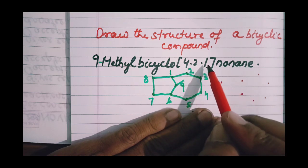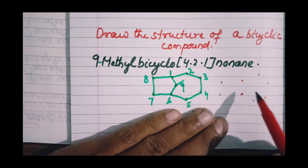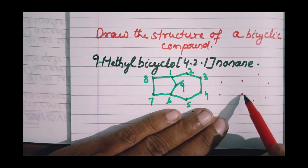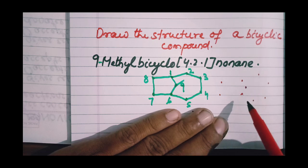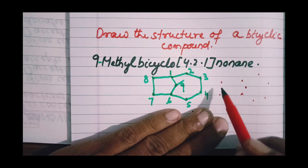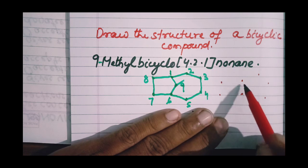Now there is another carbon bridge in between these two bridgehead carbons having a single carbon atom. Let's put a single dot here. This is a four-carbon bridge, this is a two-carbon bridge, this is a one-carbon bridge, and these two carbon atoms are bridgehead carbons.